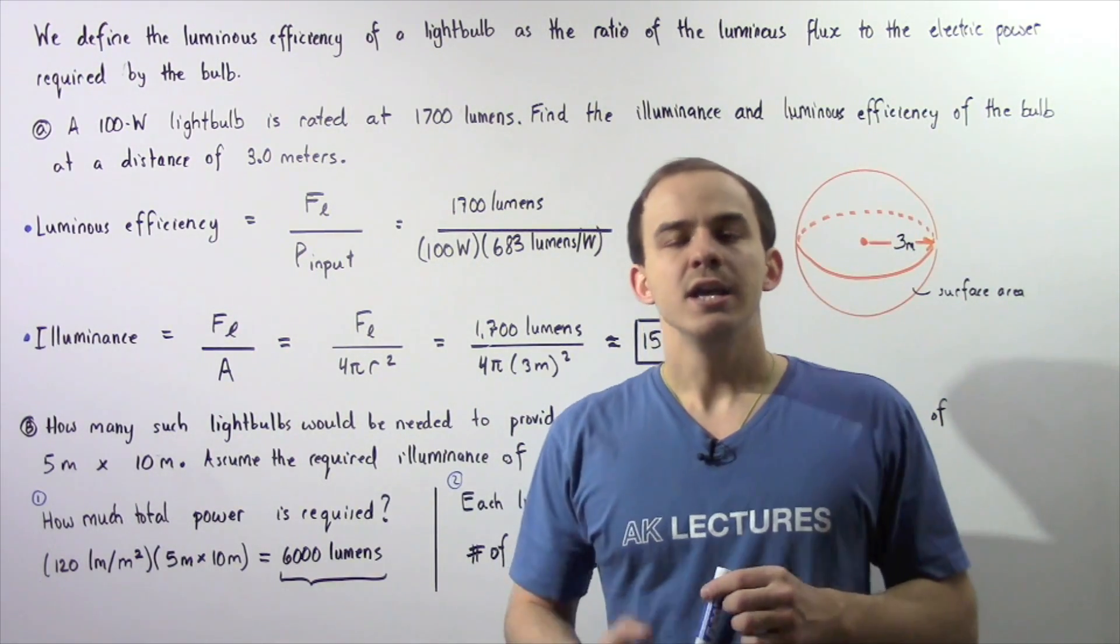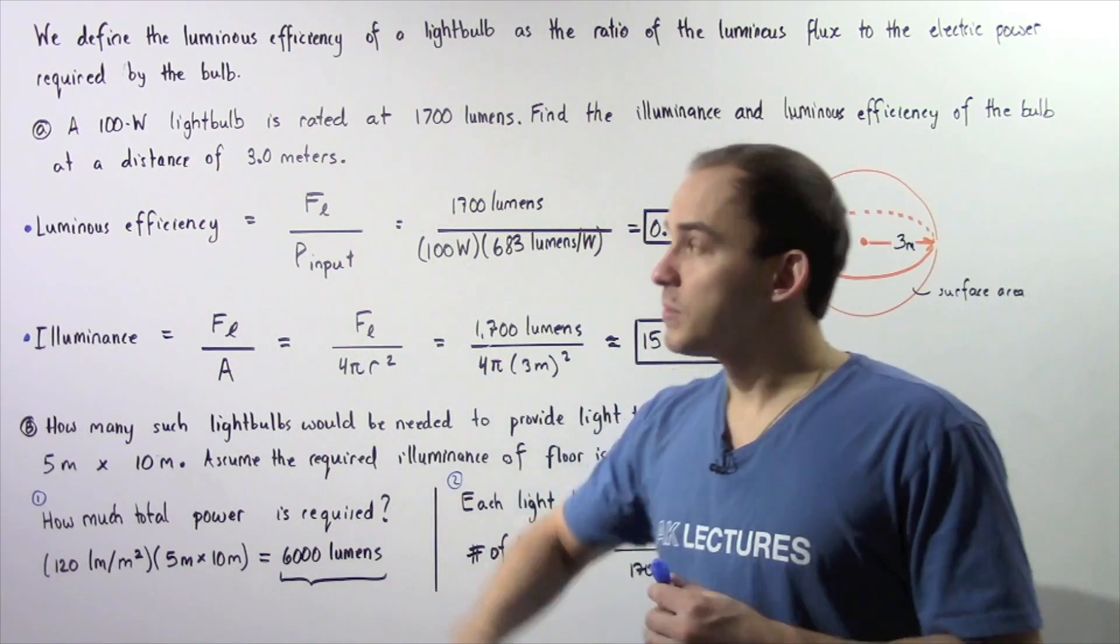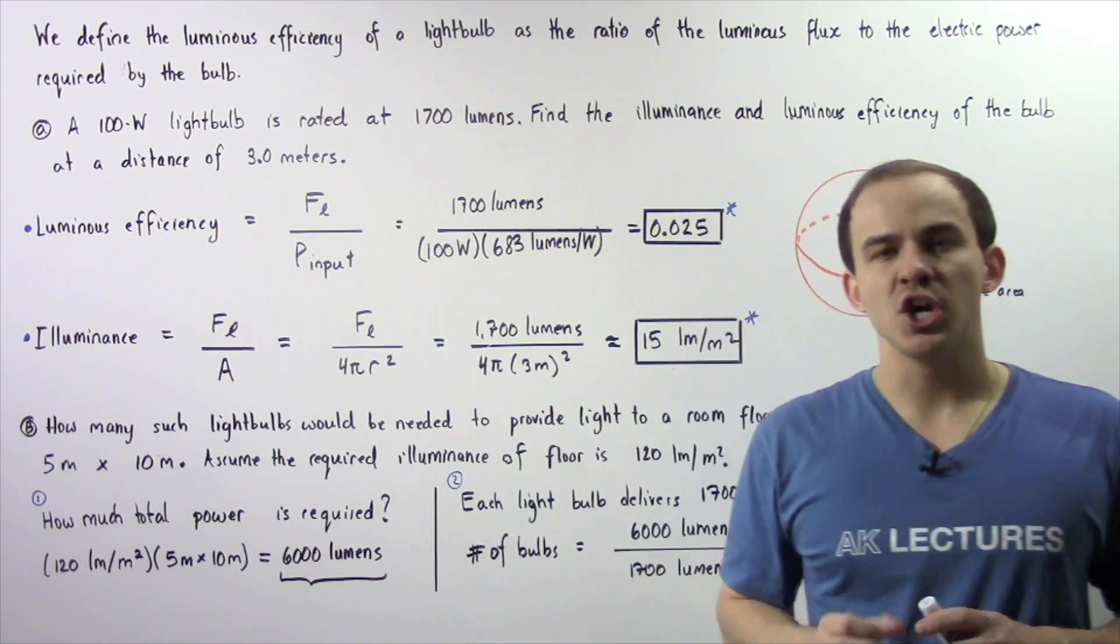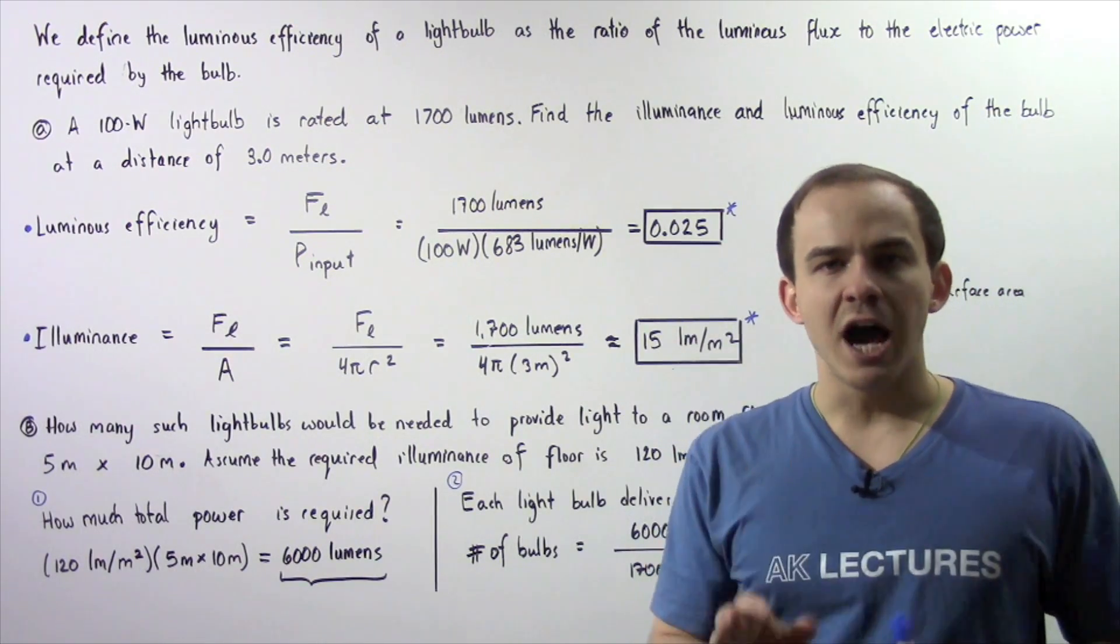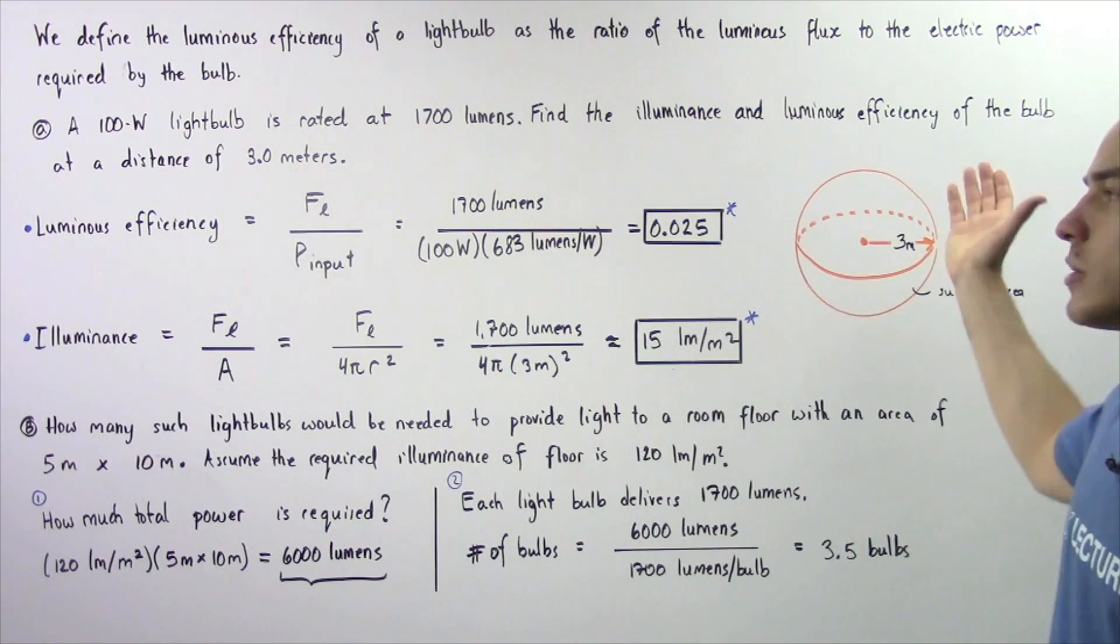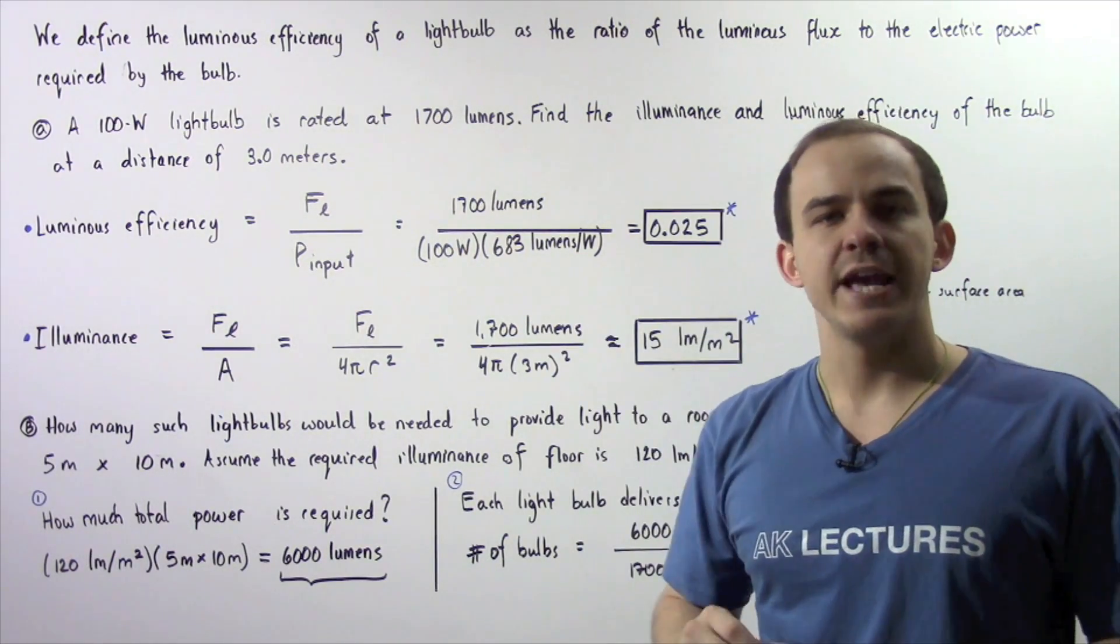But first, let's define the luminous efficiency. We define luminous efficiency of a light bulb as the ratio of the luminous flux of the light produced by that bulb to the electric power required by that same bulb.